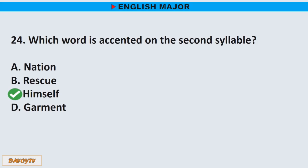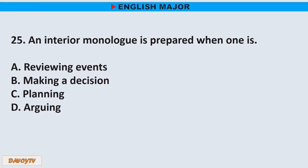Question number 25. An interior monologue is prepared when one is: A. Reviewing events. B. Making a decision. C. Planning. D. Arguing. The correct answer is letter B. Making a decision.